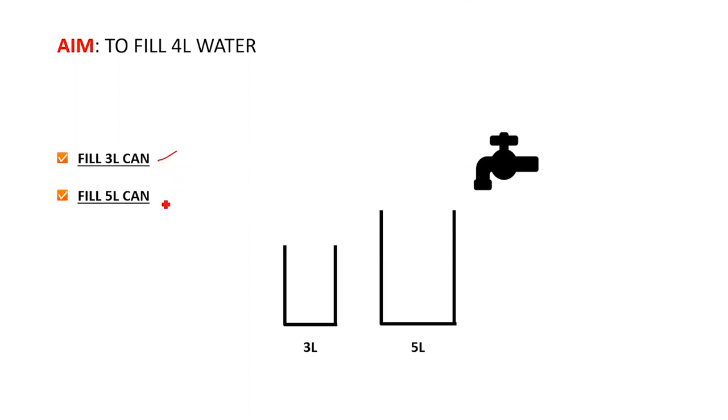The quantity of one container is three liters and that of the other one is five liters. The aim is to fill four liters of water from this tap in the five liter container without using any measurement tool.